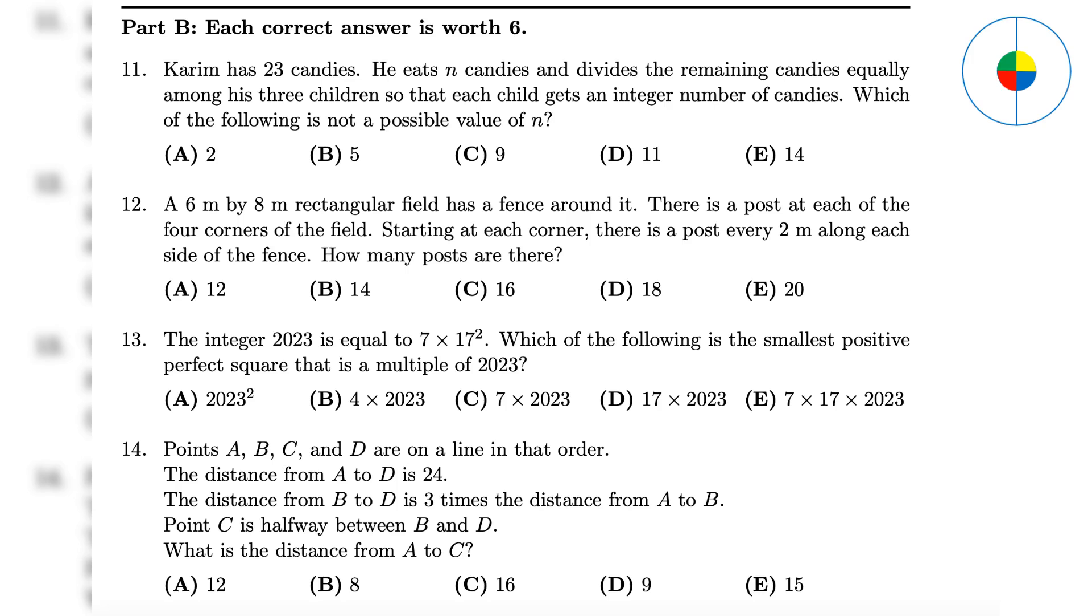Part B. Medium questions. Question 11: Use 23 minus each choice. Only 14 is not divisible by 3. The answer is C. Question 12: Use your imagination, there are 5 posts for the top or bottom, 4 posts for the left or right. The total posts are 8 plus 10 equals 18, minus 4 duplicate posts, the answer is 14.